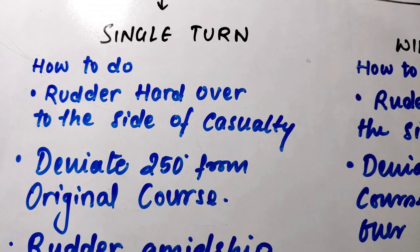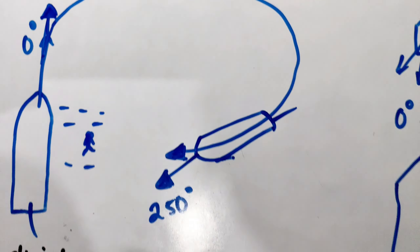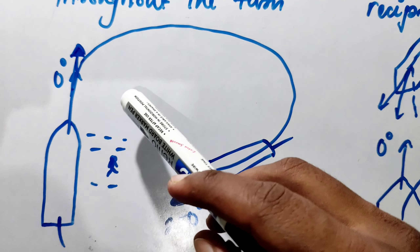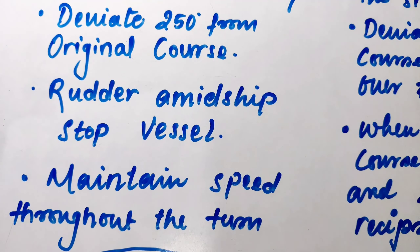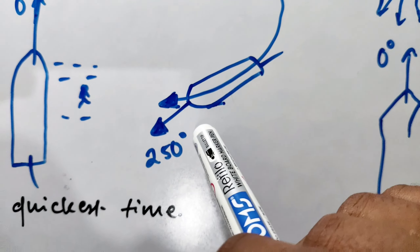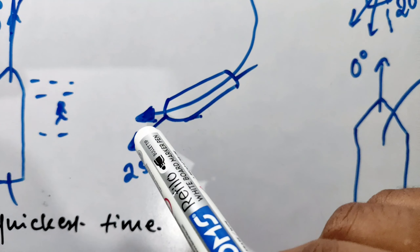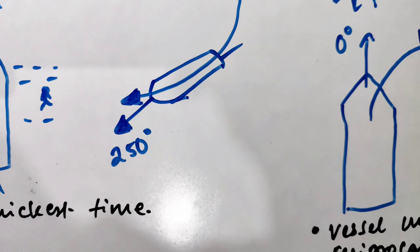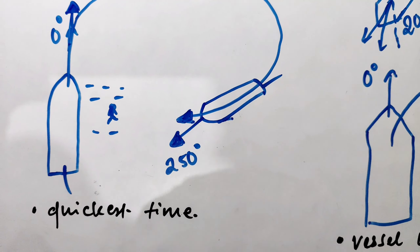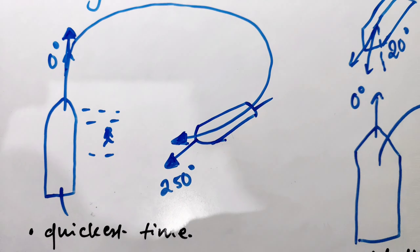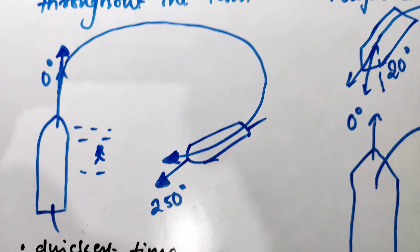For the single turn: first, put the rudder hard over to the side of the casualty. Then deviate 250 degrees from the original course. After this deviation, rudder amidship and stop the vessel. You should maintain speed throughout this turn. This turn takes the quickest time, so if you need to act very quickly, perform the single turn.